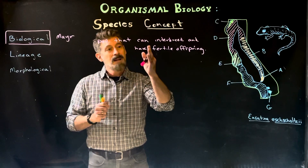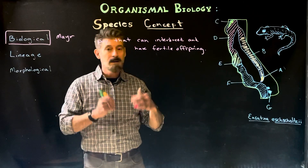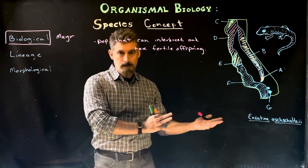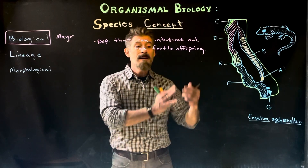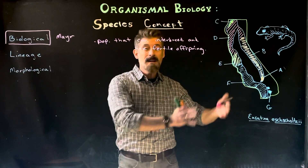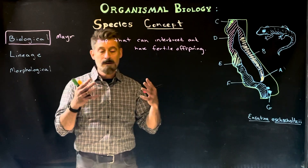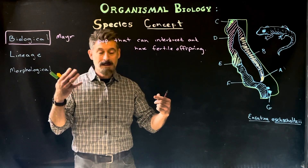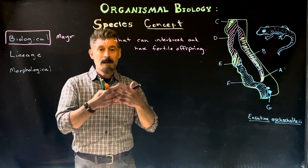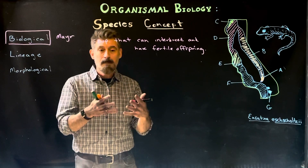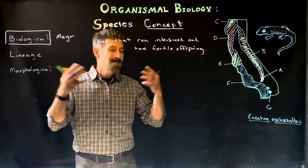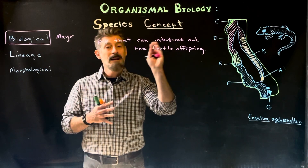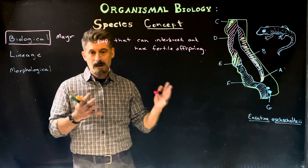Populations that can interbreed must also have fertile offspring, which essentially means the offspring have to be able to develop, be born, mature, and then become fertile enough to have offspring themselves. We have situations where hybridization occurs — organisms of different species, like a tiger and a lion, can mate and have offspring, but that hybrid is infertile. So the tiger and lion aren't considered the same species because their offspring is not fertile.